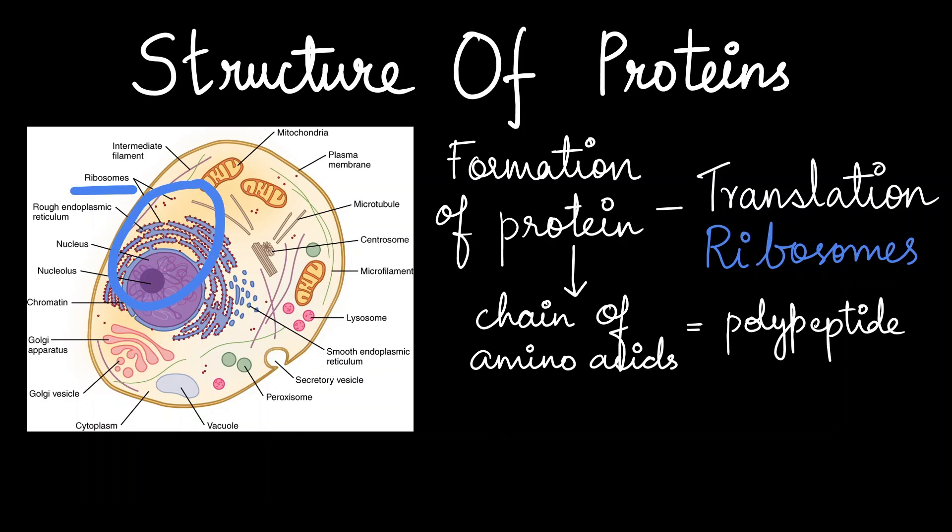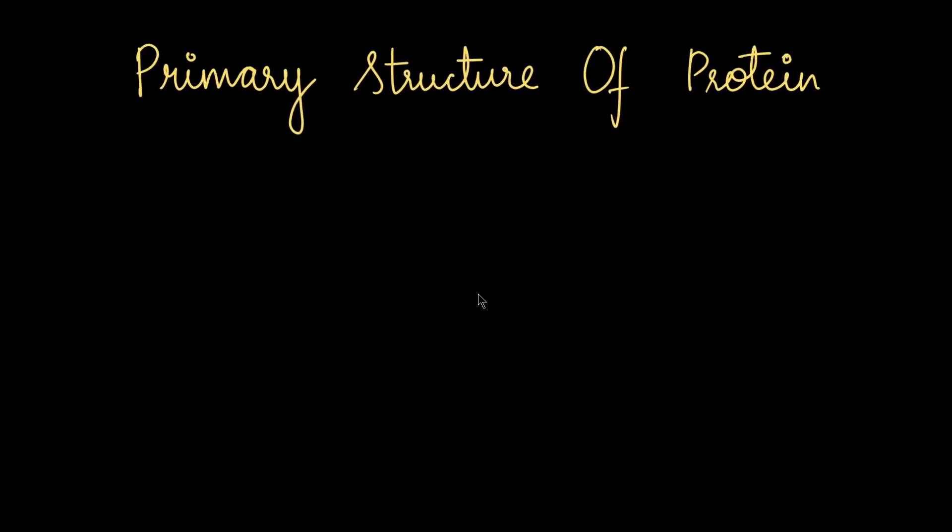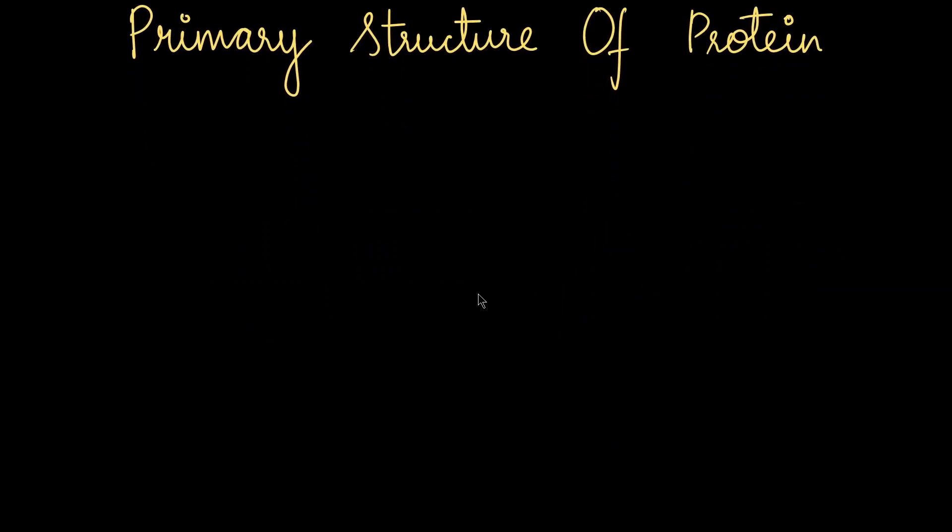The chain of amino acids is called a polypeptide. Amino acids are the basic units that make up any protein. Biologically speaking, proteins go through different levels of structure formation. The polypeptide chain that we saw is termed as the primary structure of proteins.